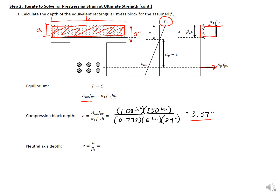We can then find our neutral axis depth. C equals A divided by beta-1, so 3.37 divided by 0.722, which gives us a C value of 4.67 inches.